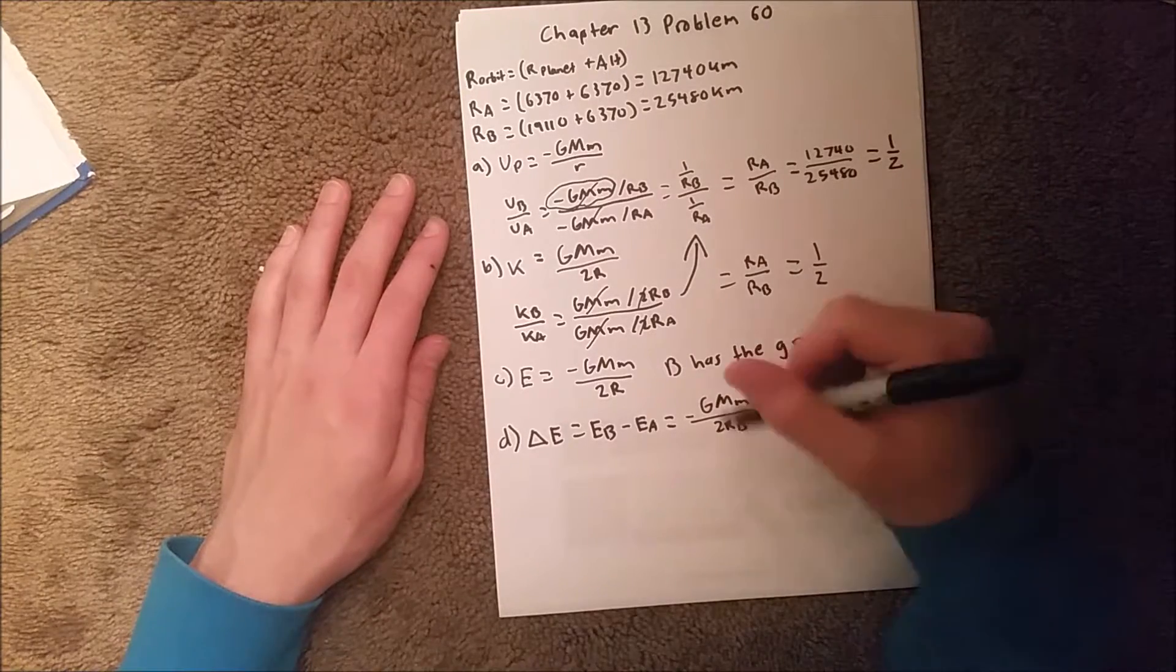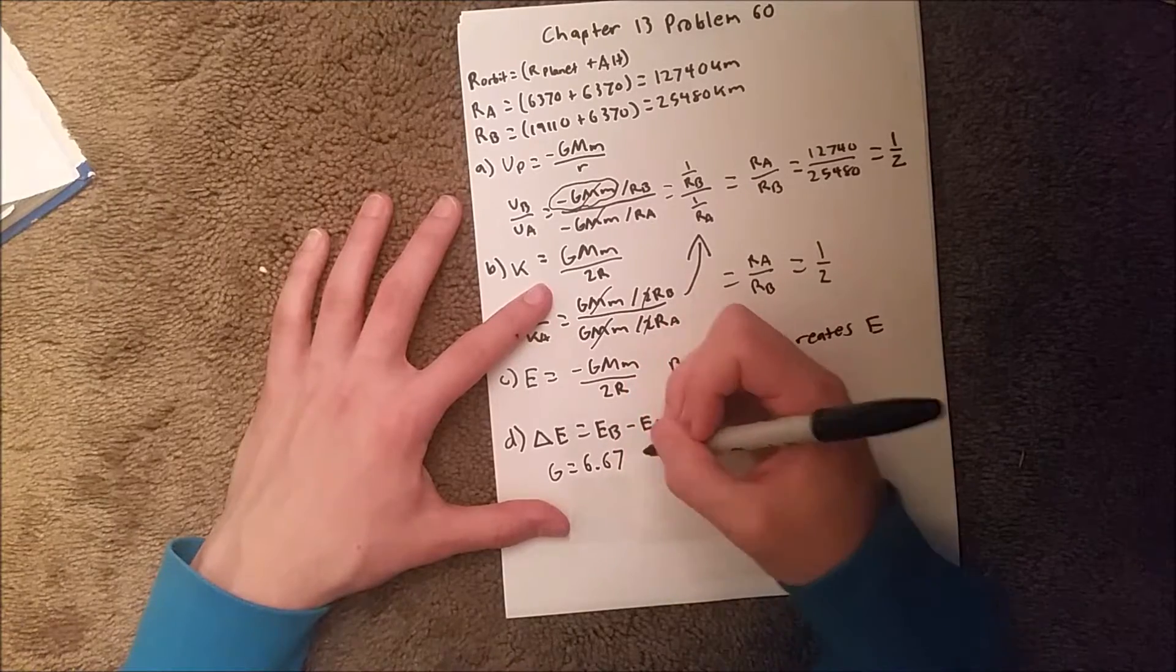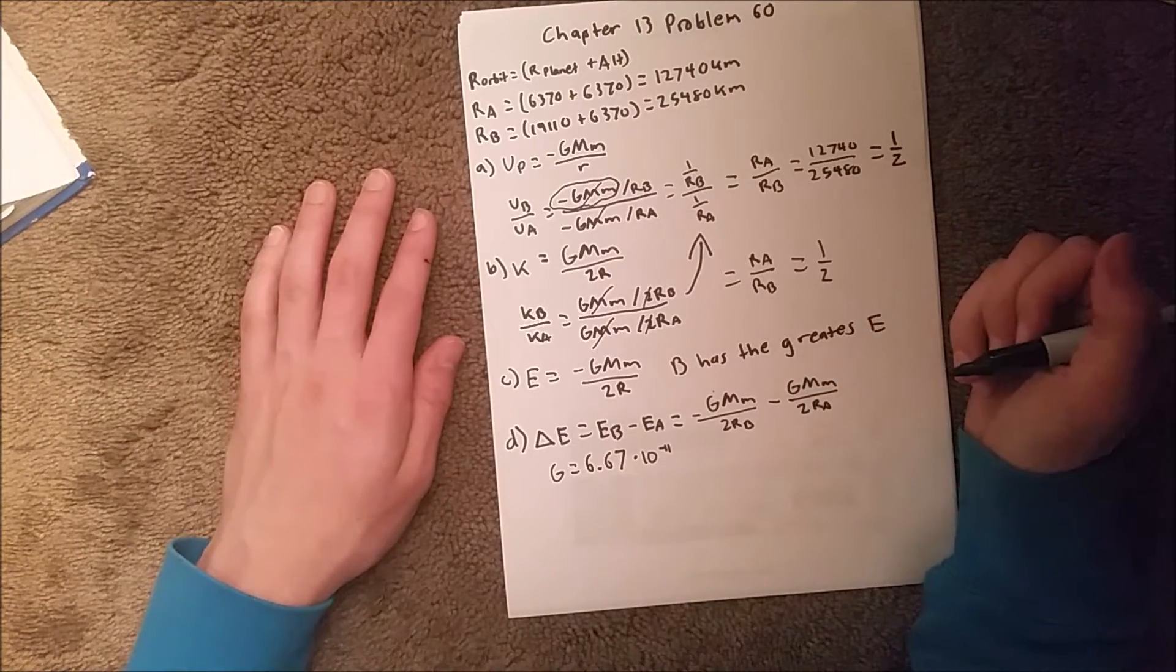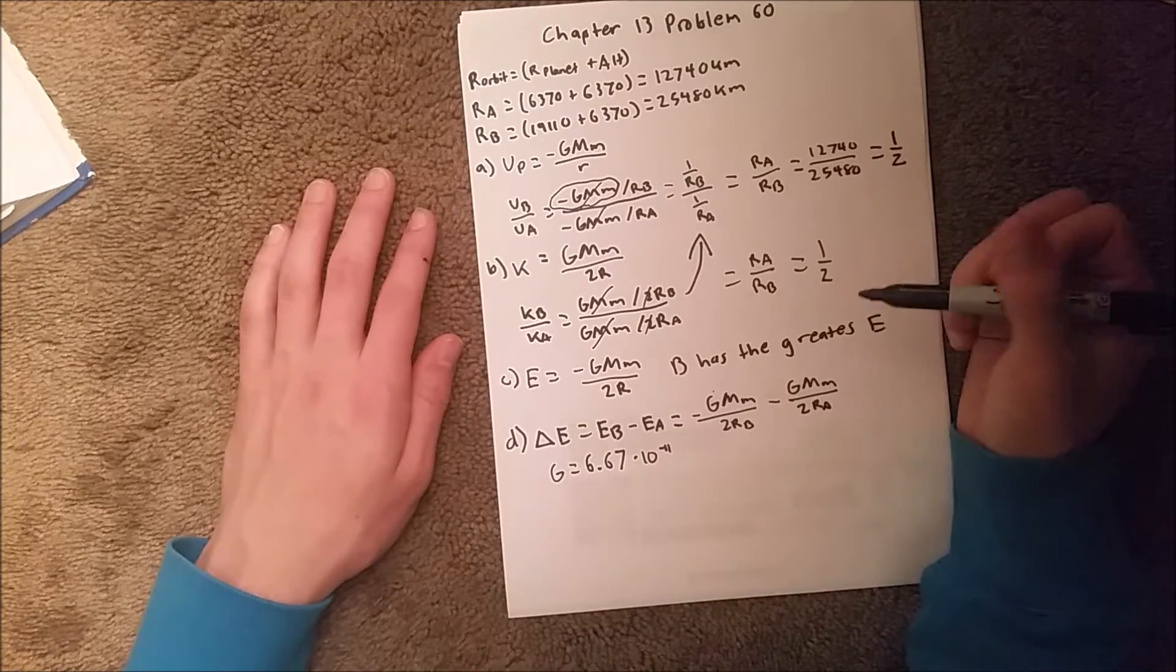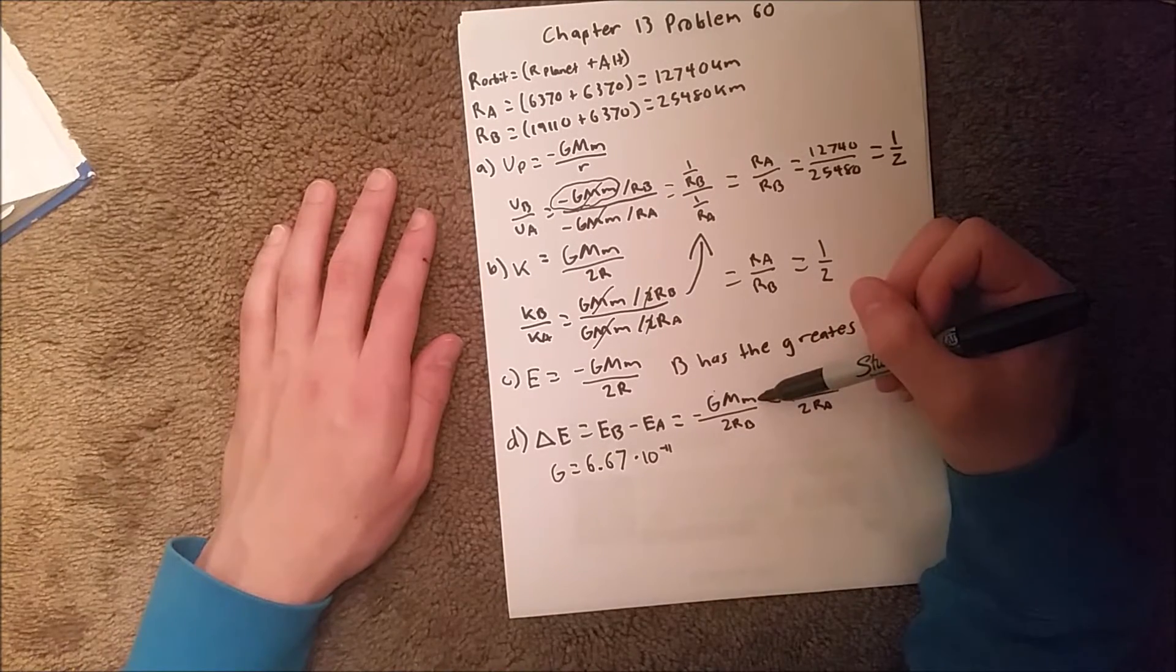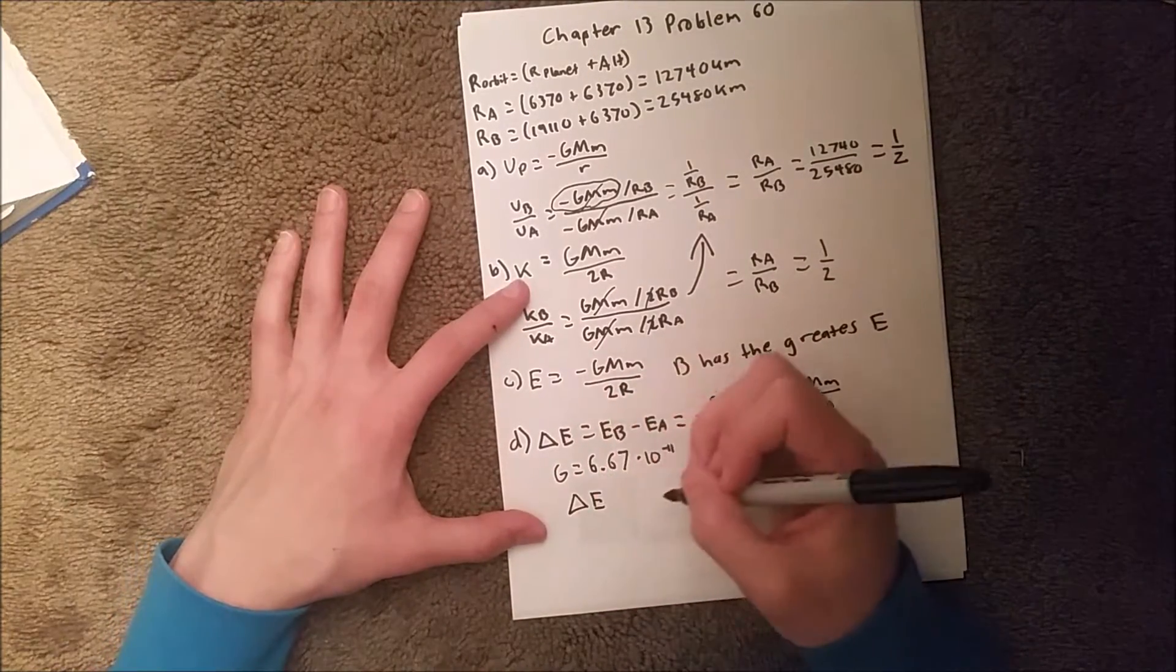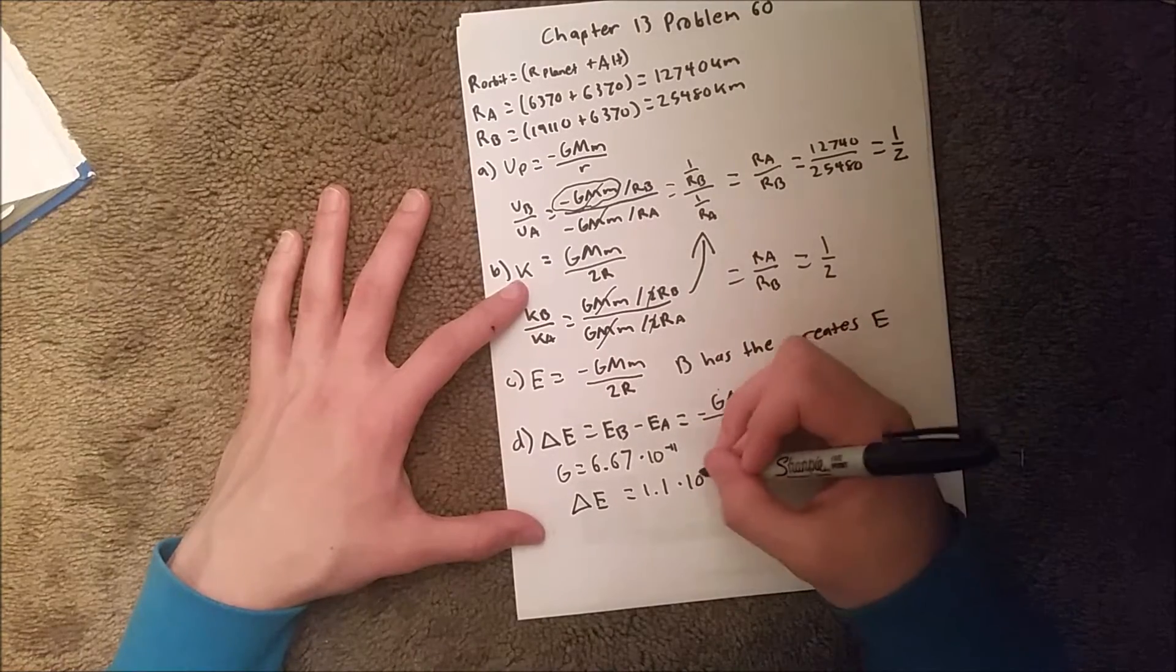And when you plug in all the values given, so you know, G is 6.67 times 10 to the negative 11th. We know the mass of the planet is given in the problem. Wait, no, it's not. You'll actually have to look at a chart in your book, or you'll have to Google the mass of Earth. But typically physics classes will teach you to memorize that constant. And then M, which is the mass of your satellite, which that is given in the problem. And then you know your radiuses. So you can solve for that. And when you do so, you should get a delta E of 1.1 times 10 to the 8th joules.